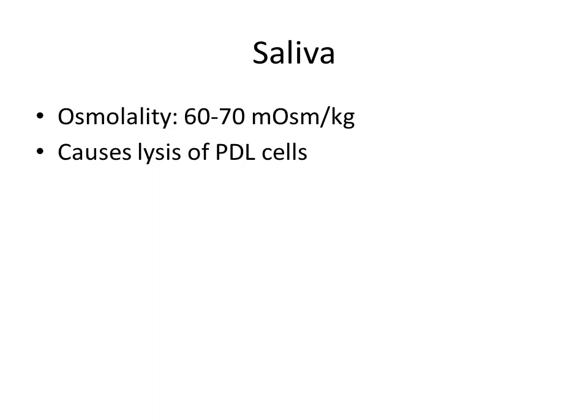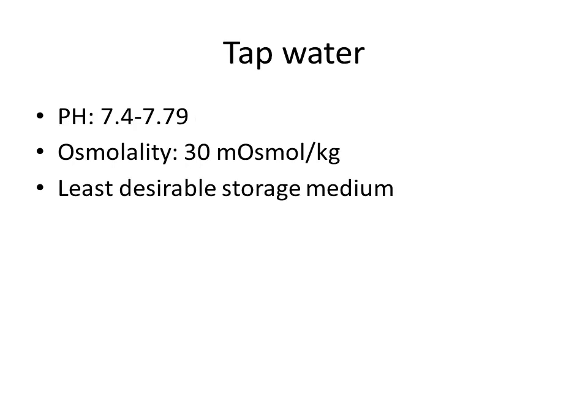Second is saliva — it has osmolality of 60 to 70 milliosmol/kg. However, saliva causes lysis of periodontal ligament fibers, leading to more bacterial action and toxic byproducts. Therefore, saliva is not regarded as a good storage medium. Third is tap water — it has hypo-osmotic pressure of 30 milliosmol/kg and pH of 7.4 to 7.79. It is the least desirable storage medium due to its hypo-osmolality.